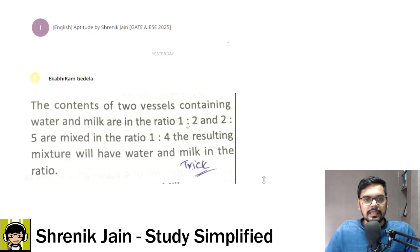First, read the question. The contents of two vessels containing water and milk are in the ratio 1:2 and 2:5 are mixed in the ratio 1:4. The resulting mixture will have water and milk in the ratio of what.